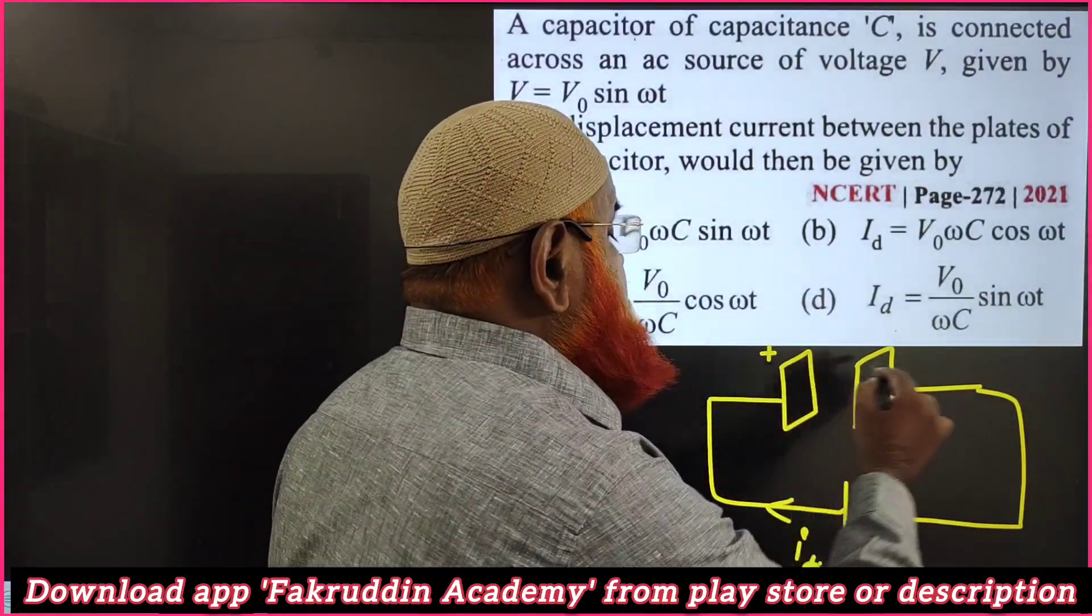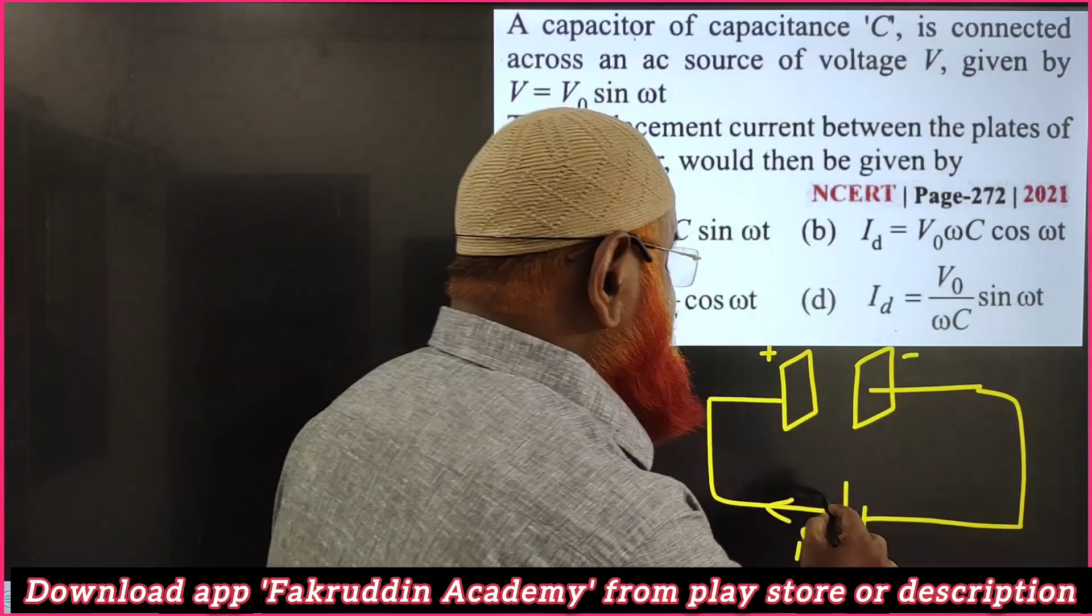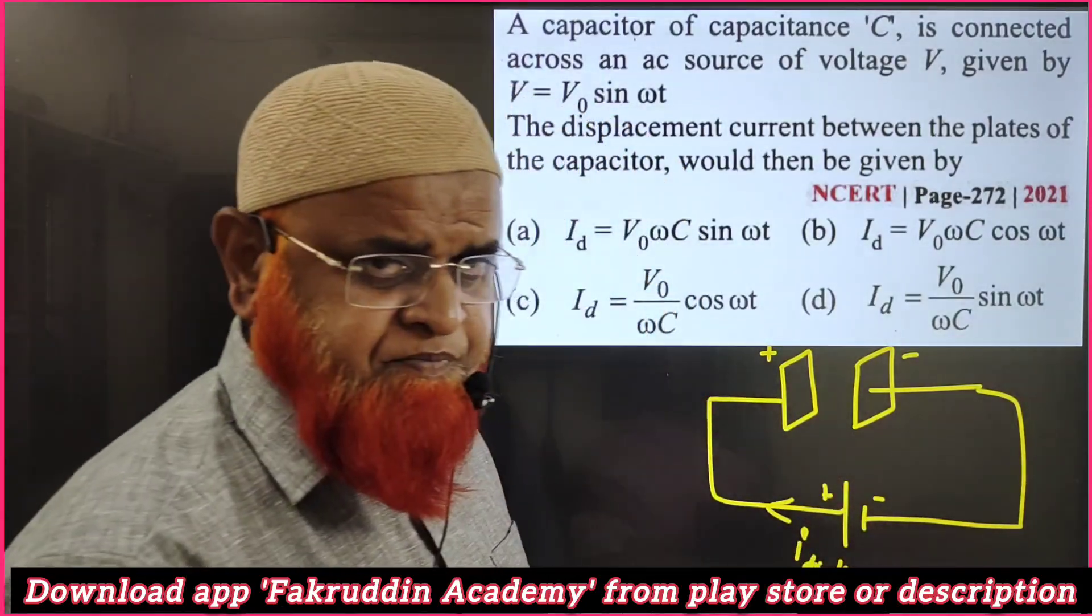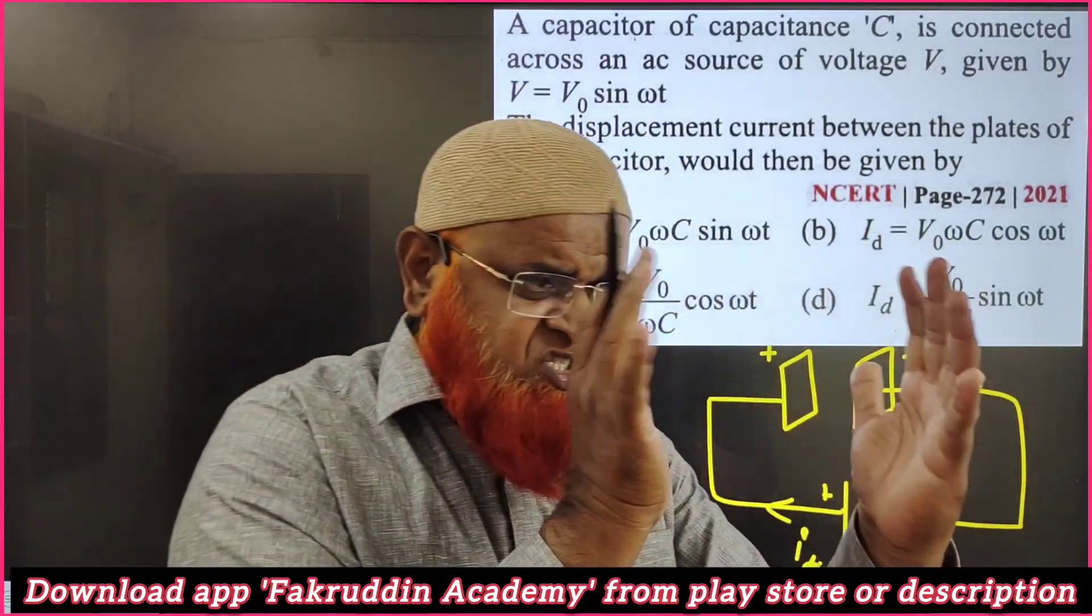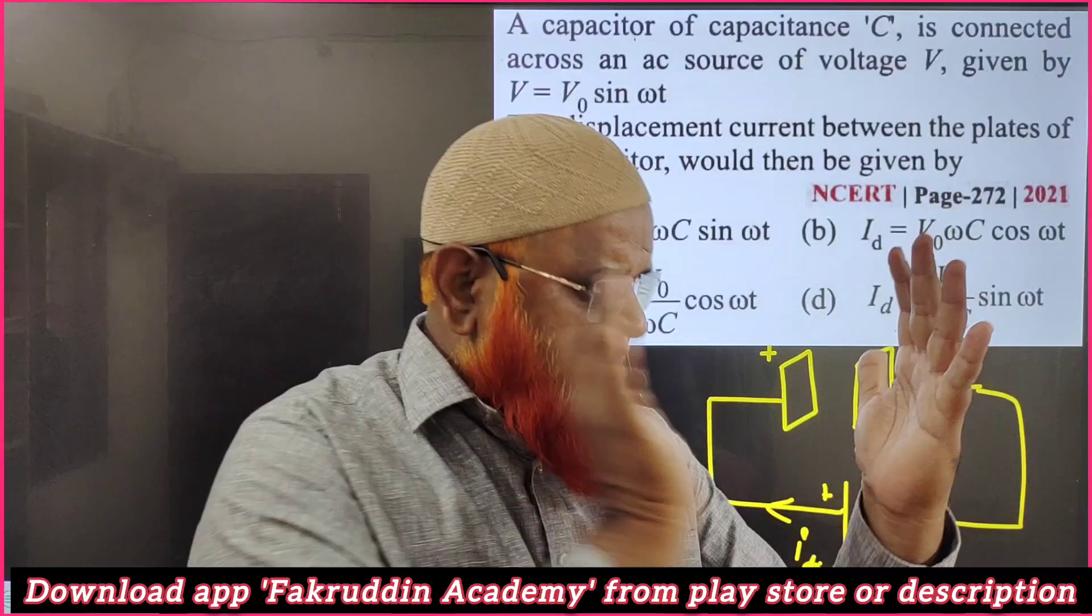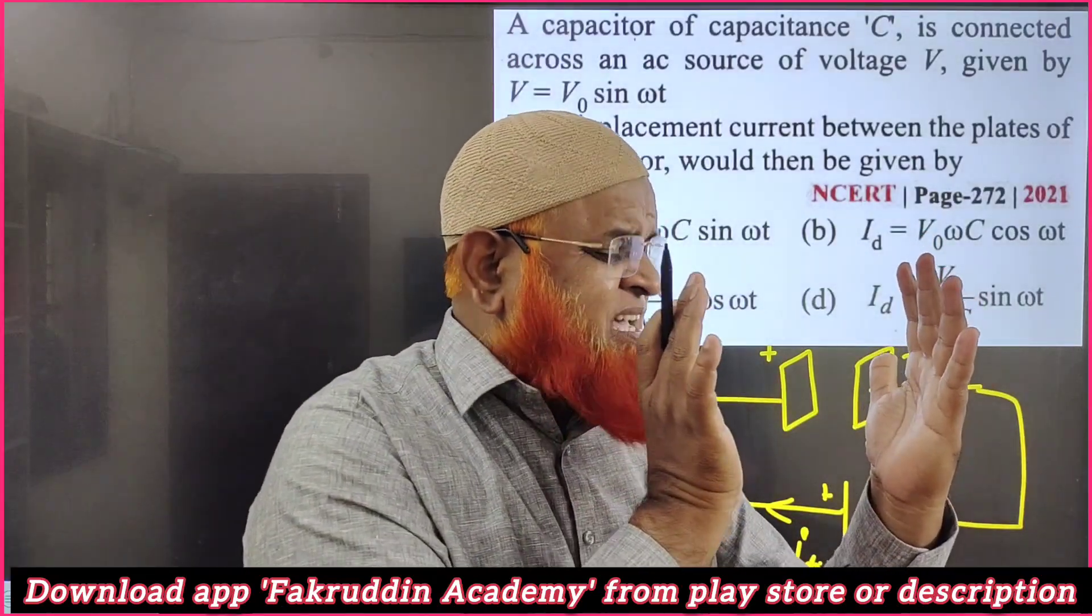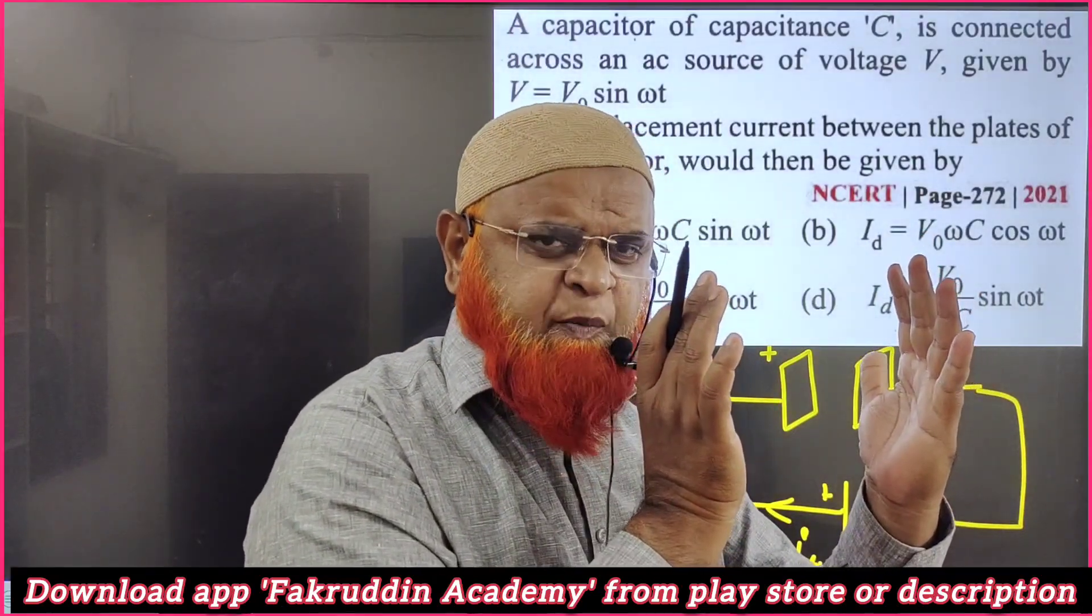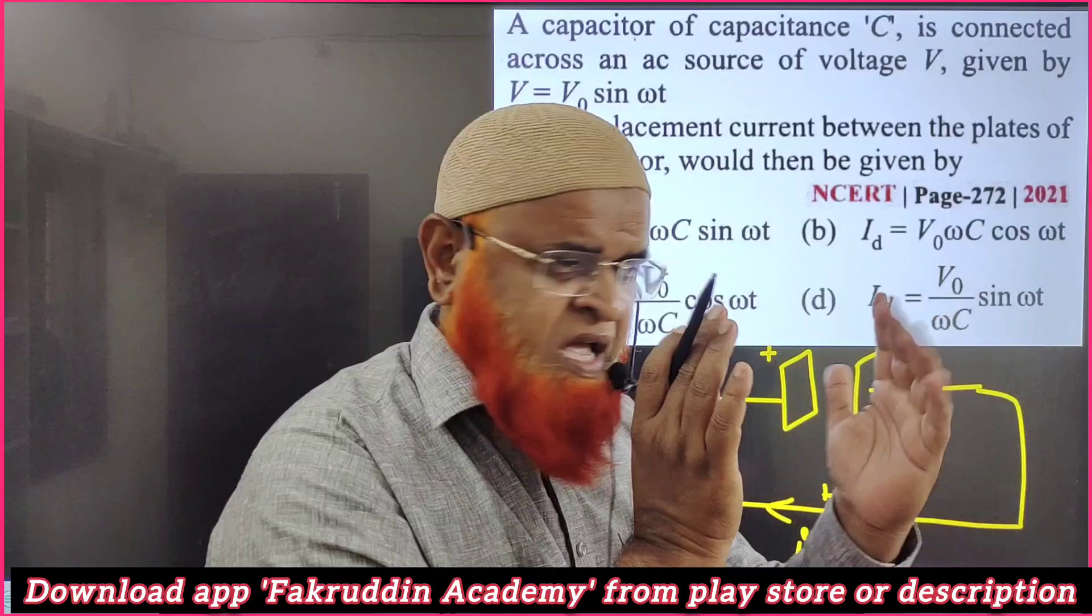There is a capacitor having positive charge and negative charge because this is connected to positive and negative. But in between the capacitors there is a gap. The current passing in this gap is said to be displacement current.